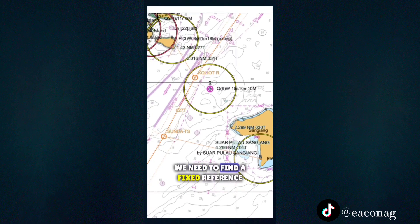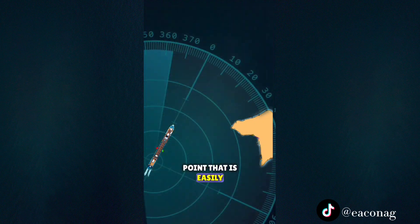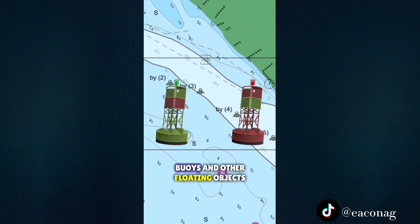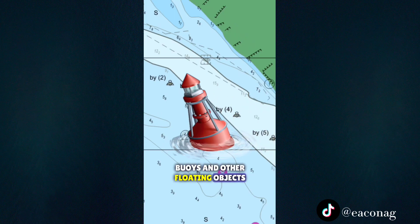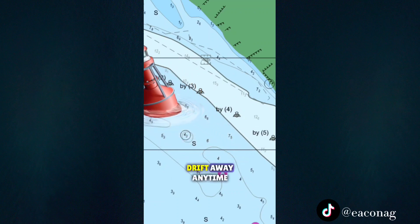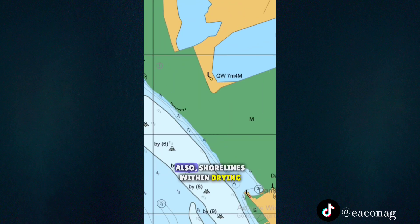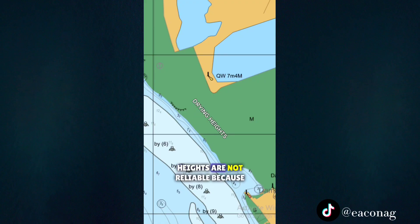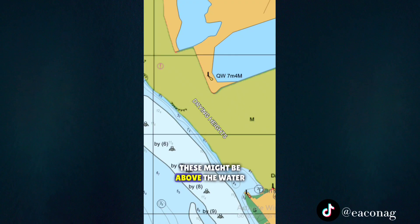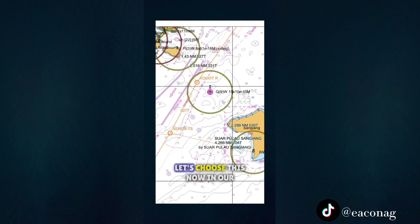First, in a chart, we need to find a fixed reference point that is easily recognizable in radar. Buoys and other floating objects are not included because they can drift away any time. Also, shorelines within drying heights are not reliable because these might be above the water by the time you are in the area.